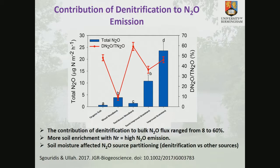The contribution of denitrification to total N2O emissions varied across land use types. Denitrification versus other processes, mainly nitrification, contributed from 8 to 60 percent of total N2O emissions. More enrichment of systems with nitrogen is reflected in more N2O emissions. Soil moisture seems to have mainly regulated the balance between denitrification and other sources across these land use types.